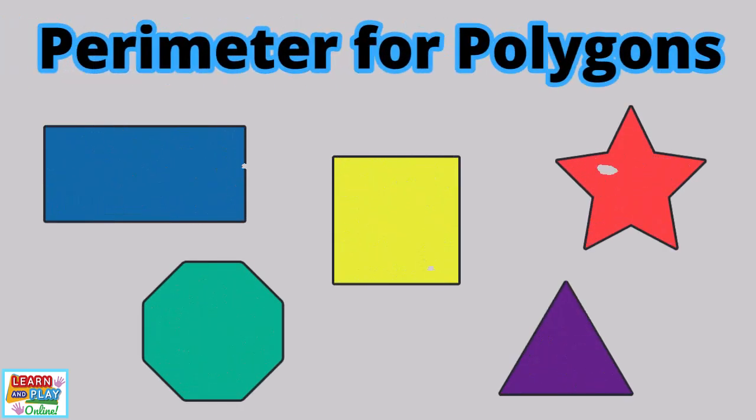Calculating perimeter for polygons, which are shapes with all straight sides, is simple because all you have to do is add up all the lengths of the sides together.